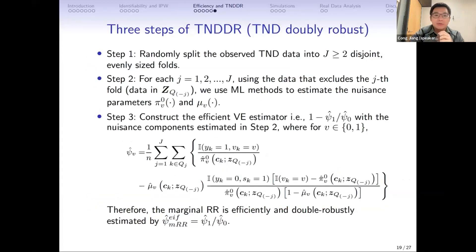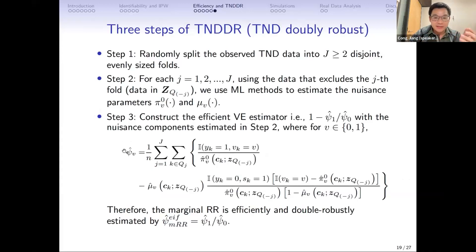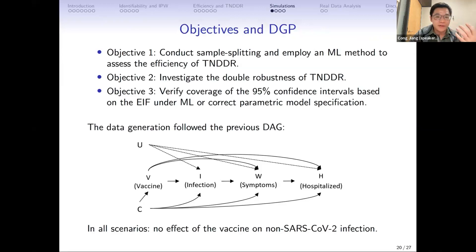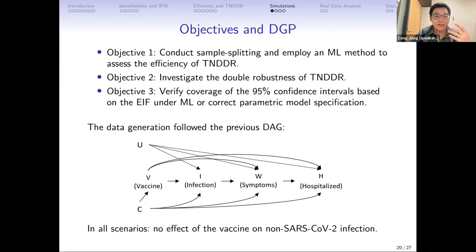Based on this result, we give the three-step algorithm called TENDER. The first step is sample splitting. The second step uses cross-fitting and machine learning to estimate the nuisance functions. The third step constructs the vaccine effectiveness estimator as the efficient estimator psi V hat.